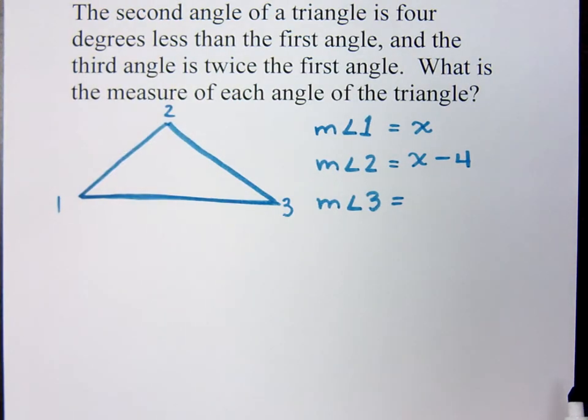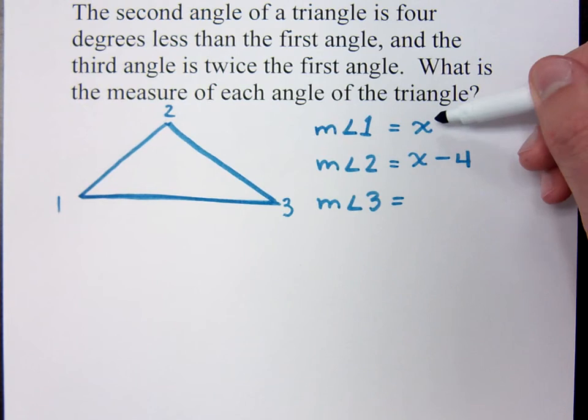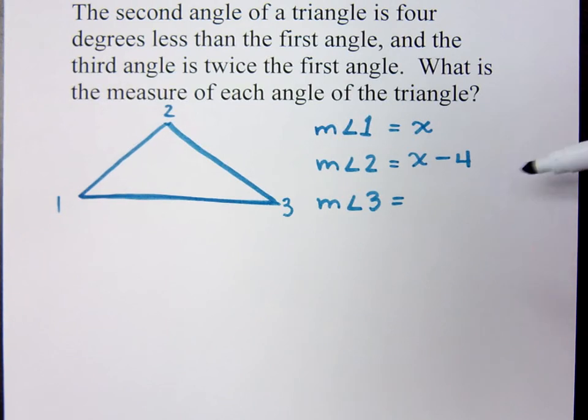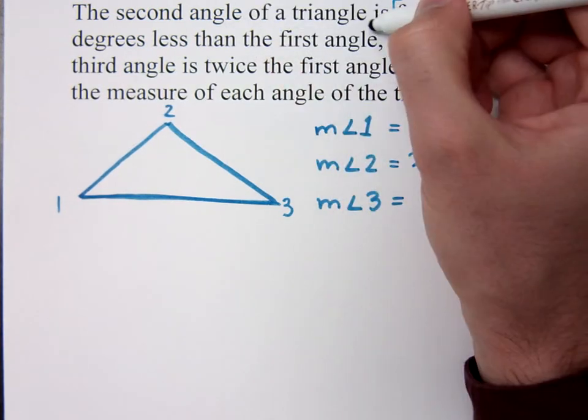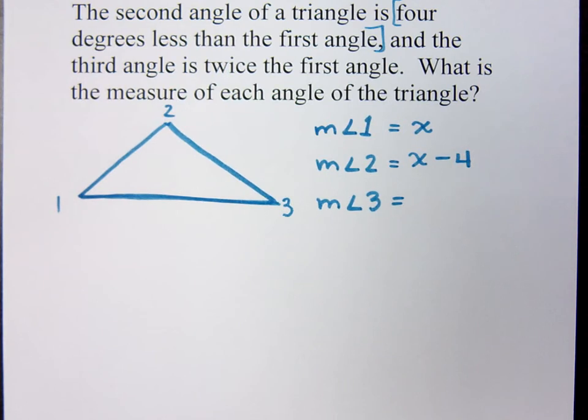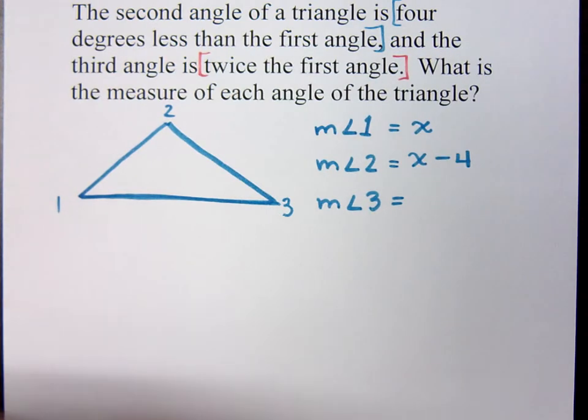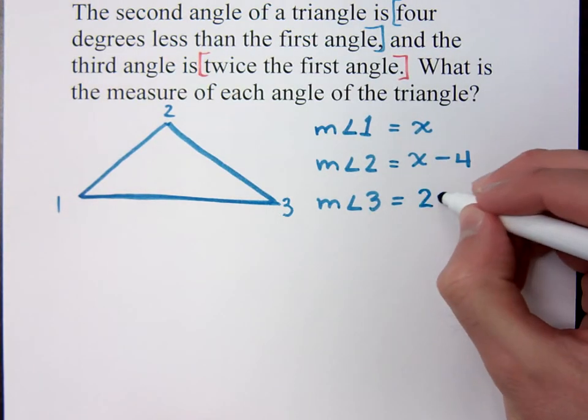x minus four. I'm sorry. Start that over, please. The first one is x because we don't know anything about the measure of the first angle. The second one is four degrees less than the first angle. And what about the third angle? The third angle is twice the first. Two x. Twice the first angle. So that's why we're going to represent that guy by 2x.